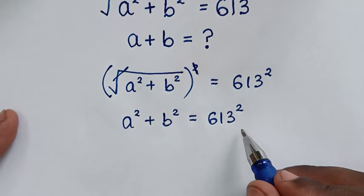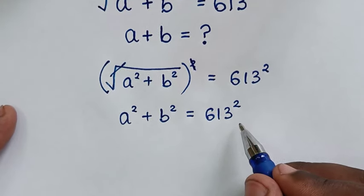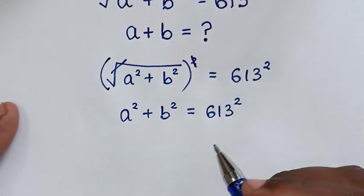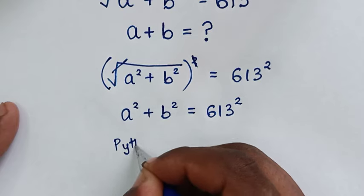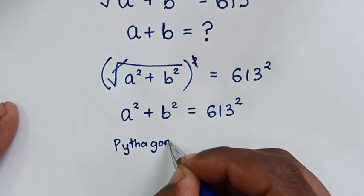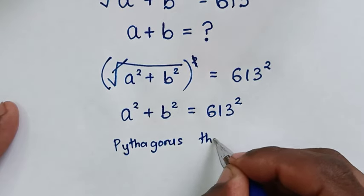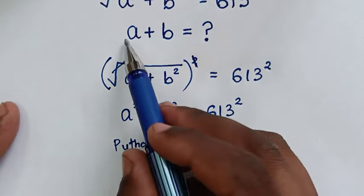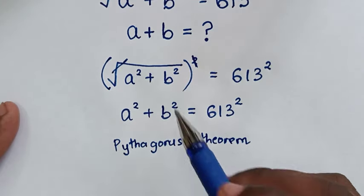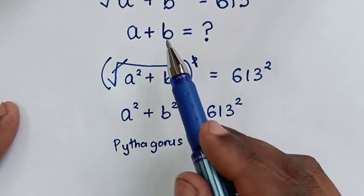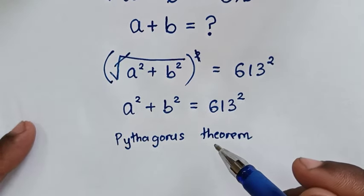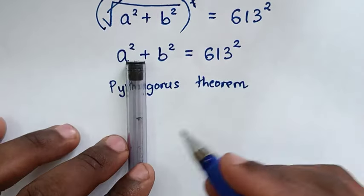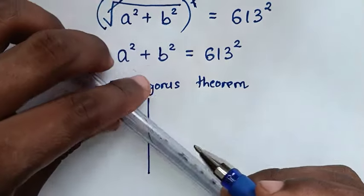Now this is in the form of the Pythagorean theorem, which is a squared plus b squared equals c squared. By applying the Pythagorean theorem, because we are finding a plus b, it will be easier to get a plus b by applying the Pythagorean theorem in terms of n. So let's draw a right angle triangle.